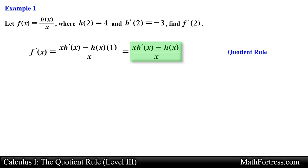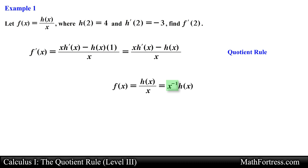Applying the Quotient Rule we obtain the following expression for the derivative. Note that we could also rewrite this function with the denominator written as a negative exponent, in which case we would have to apply the Product Rule. For this example let's continue on with the Quotient Rule.